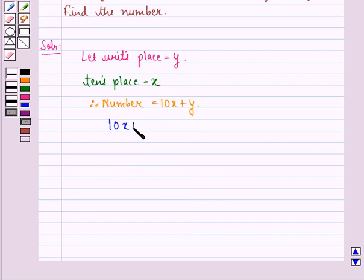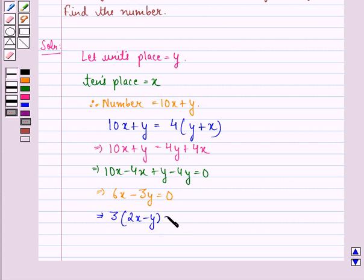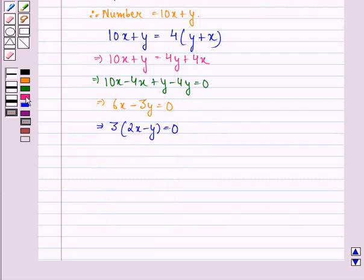the number 10x plus y is equal to four times the sum of its digits, that is x plus y. This implies 10x plus y equals 4y plus 4x. This implies 10x minus 4x plus y minus 4y equals zero. This implies 6x minus 3y equals zero, which simplifies to 3(2x minus y) equals zero, or 2x minus y equals zero.